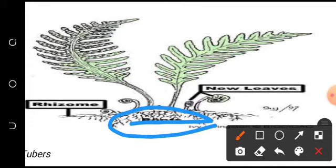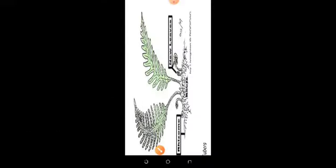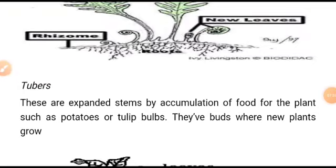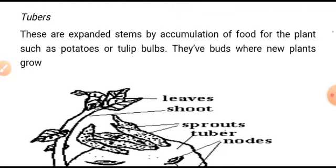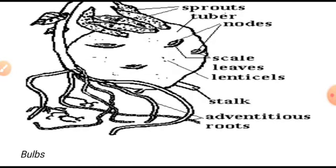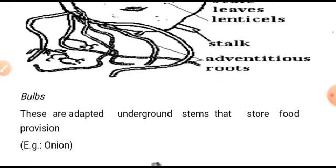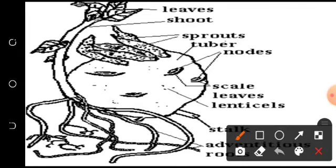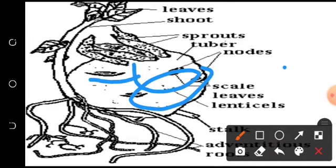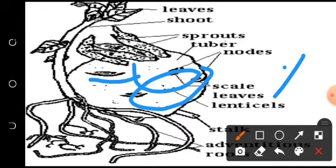Rhizomes are likely to be found on pteridophytes — ferns. There are also what you call tubers. These are expanded stems formed by accumulation of food for the plant, such as potato or sweet potato. They have buds called eyes from which new plants grow. Tubers have ribs, shoots, and scale leaves.